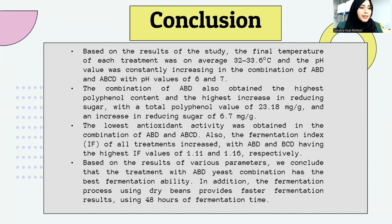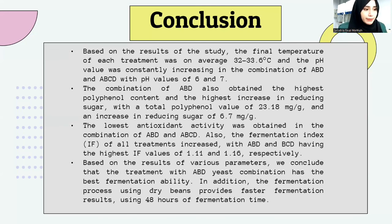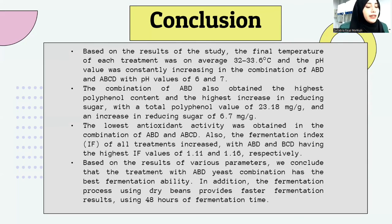In conclusion, the final temperatures of the yeast treatments ranged on average from 32 to 33.6 degrees Celsius. The pH value constantly increased in the combinations of ABD and ABCD, reaching pH 6 and 7. The ABD combination also obtained the highest reducing sugar content of 6.7 mg per gram and a total polyphenol value of 22.3 to 0.18 mg per gram. The lowest antioxidant activity was obtained in the ABD and ABCD combinations. Based on these results, we conclude that the ABD yeast combination has the best fermentation stability. The fermentation process using dry yeast provides faster fermentation results within 48 hours.